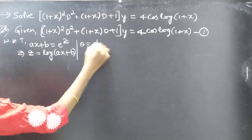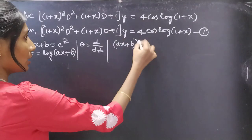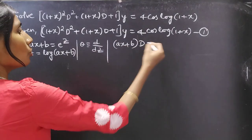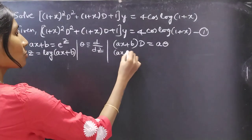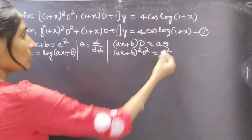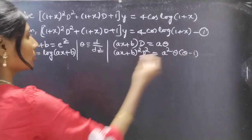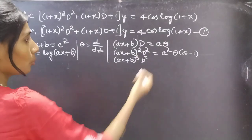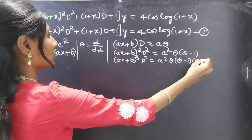Here θ = d/dz. And (ax+b)·D can be replaced by a·θ. If we have (ax+b)²·D², it can be replaced by a²·θ(θ−1). If we have (ax+b)³·D³, it can be replaced by a³·θ(θ−1)(θ−2), and so on.